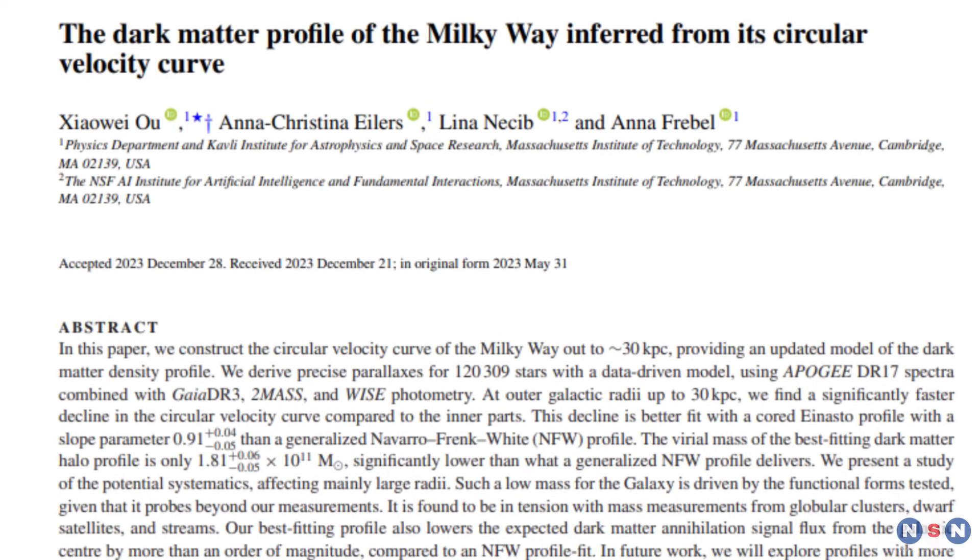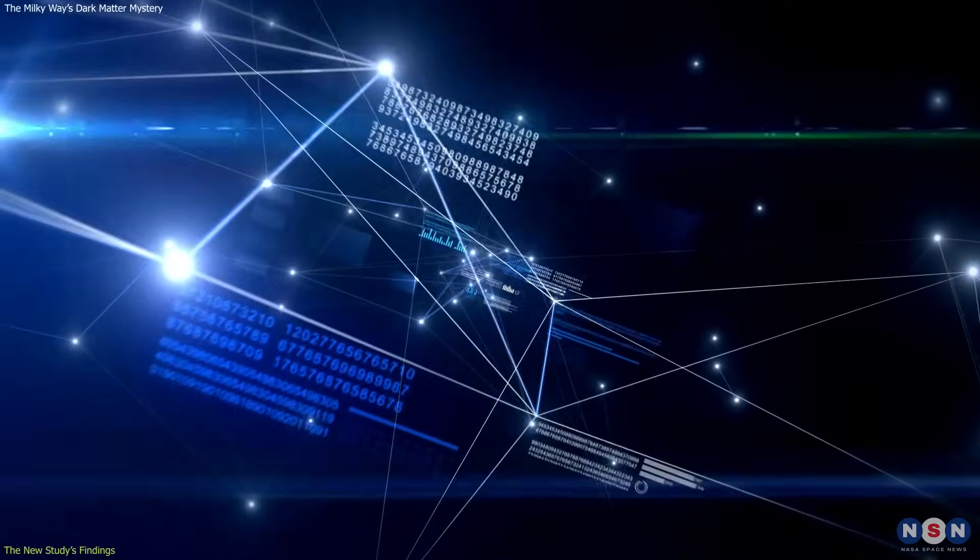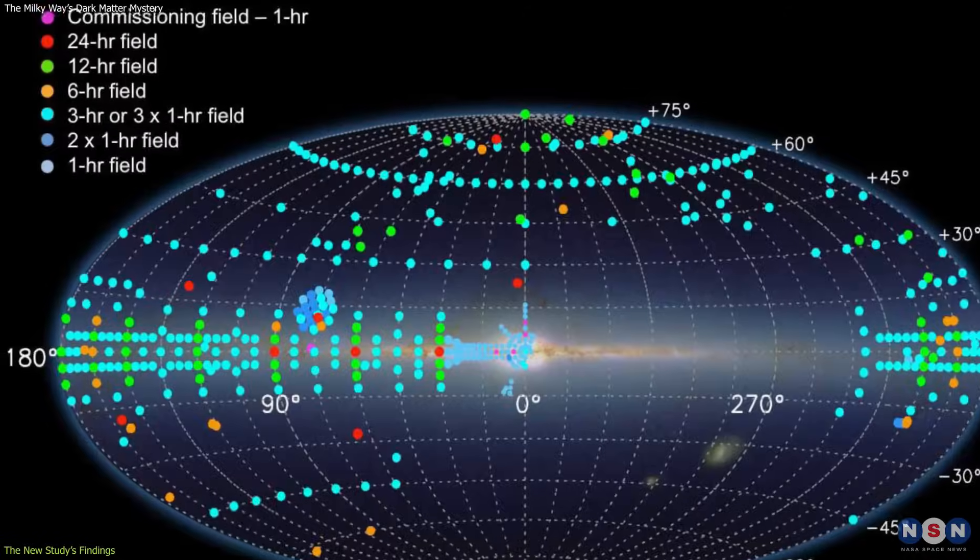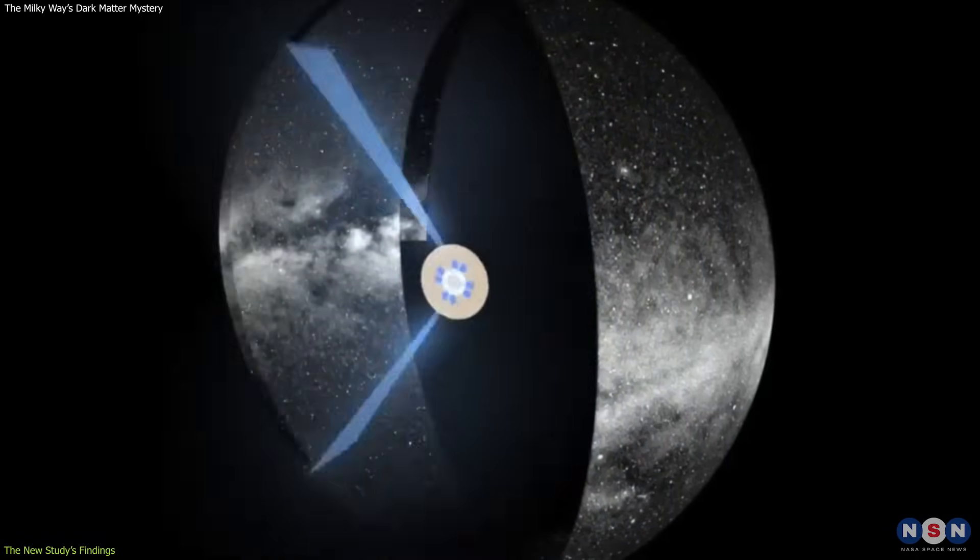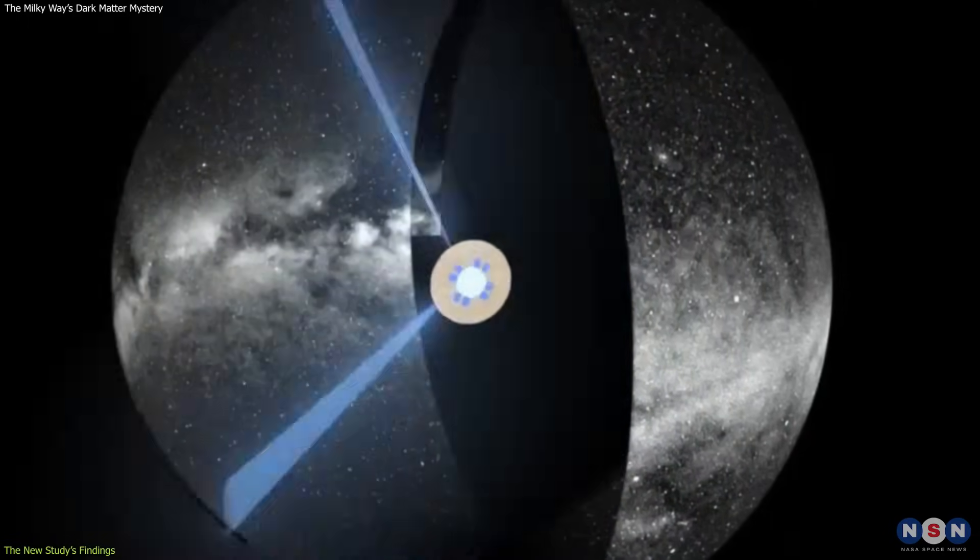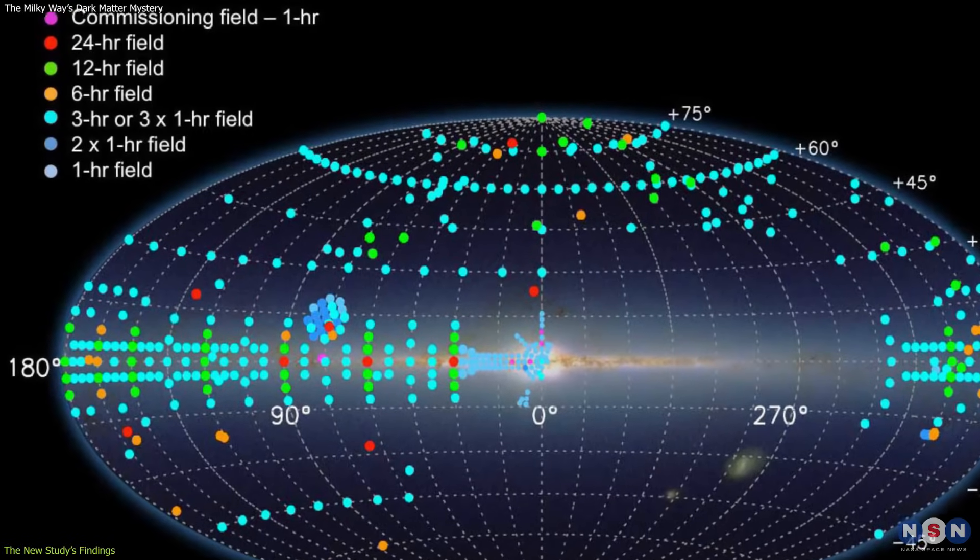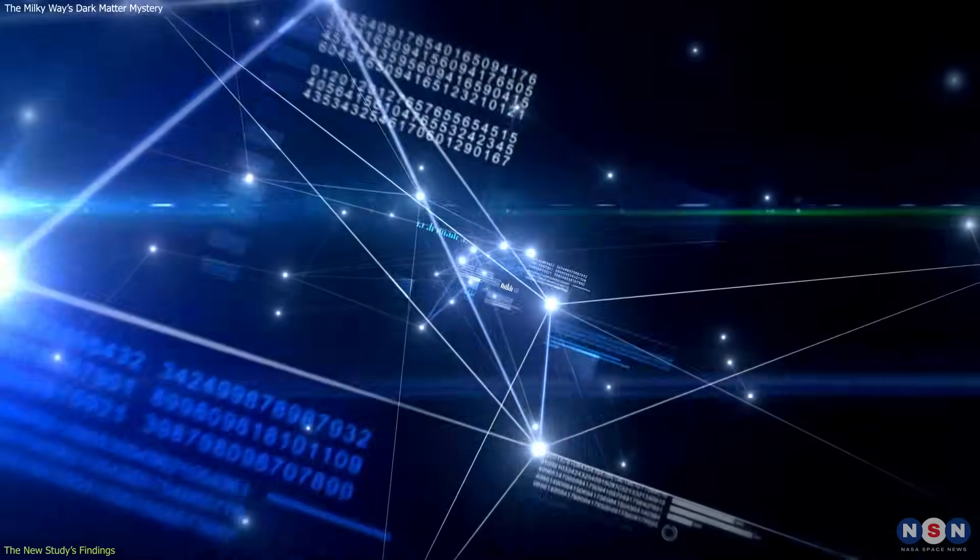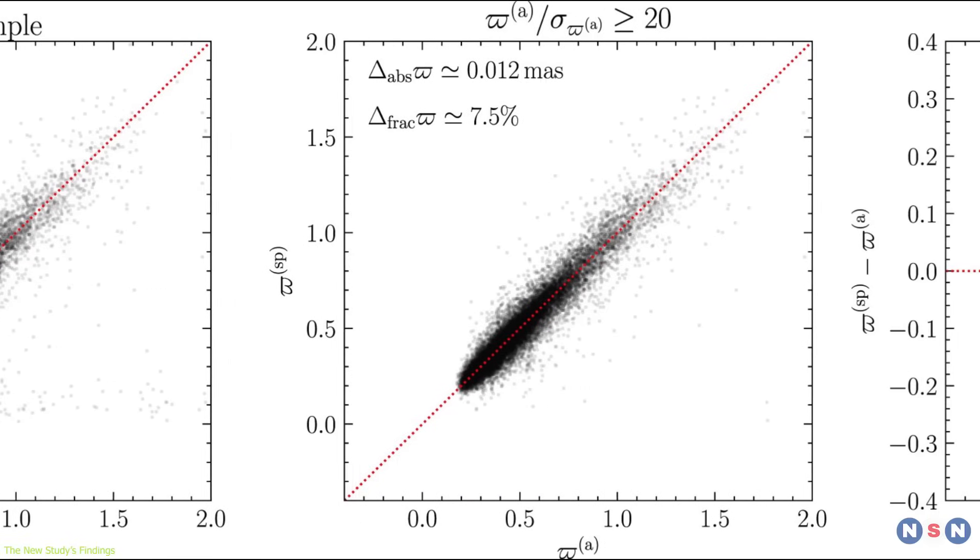The first thing you need to know is what the new study actually found and how it did so. This study is based on the analysis of data from two instruments, Gaia and Apogee. Gaia is a space telescope that measures the location, distance, and motion of more than one billion stars throughout the Milky Way galaxy. On the other hand, Apogee is a spectrograph attached to a ground-based telescope in New Mexico that measures the chemical composition and temperature of about half a million stars in the galaxy.